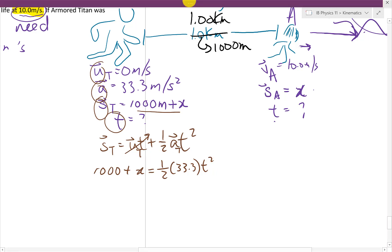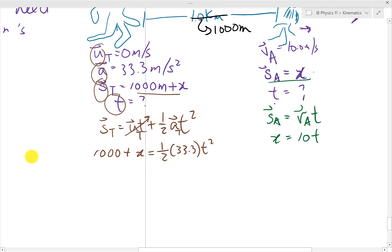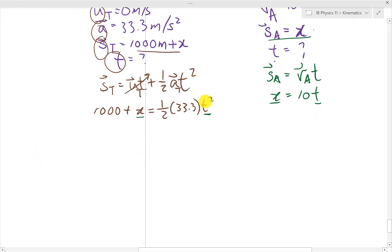So that's our first equation for the Armored Titan. Then for Armin, which I'm going to use green for scouts. He has a displacement of X. So his displacement is his velocity times the time, which we know that SA, his displacement is X, and his constant velocity of 10 times T. Now we have two equations, and they both have two variables in common, the X and the T. So what we can do now is we can substitute one equation into the other one and solve for the second variable.